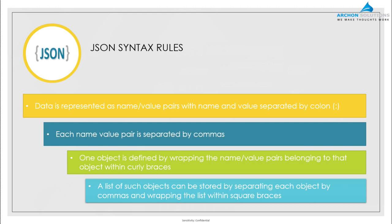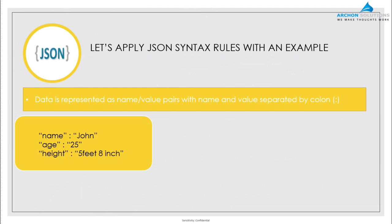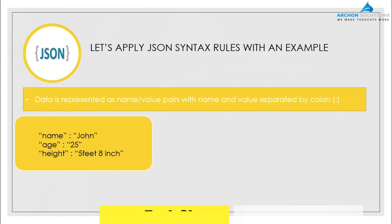Let's take these rules and see them in an example. Suppose a website is passing a customer's details to its back end. The detail involves the person's name, age, and height. The name-value pairs are represented as: name colon John, age colon 25, height colon 5 feet 8 inches. This is data of one single person being passed from one source to the other, applying rule one — name-value pairs separated by colons.